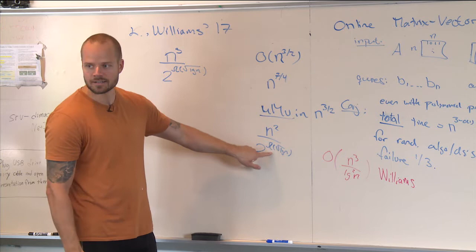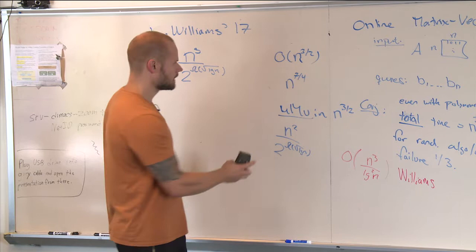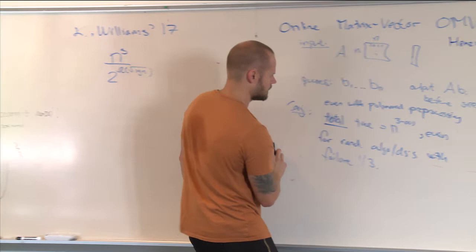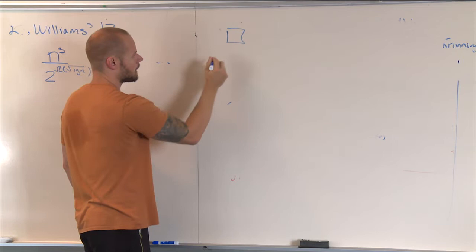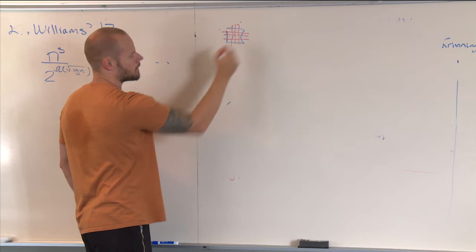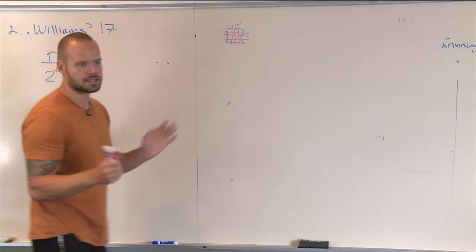We're going to solve the vector matrix vector multiplication problem in the cell probe model first, with n^(3/2) time. The input is this n by n boolean matrix, and we want to answer queries — whether a submatrix has a 1. What we're going to do is look at this matrix during preprocessing. We have arbitrary preprocessing time in the cell probe model — we just build a static data structure.